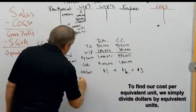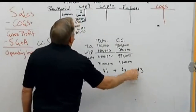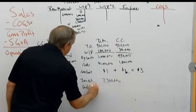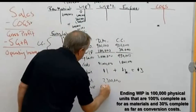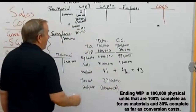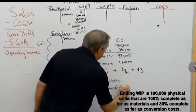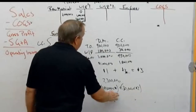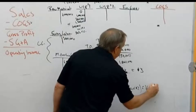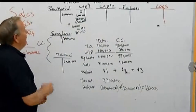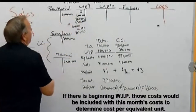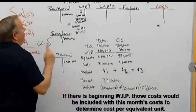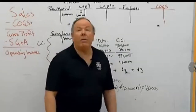Transferred out: $3 times 900,000 units equals $2,700,000. Ending work in process: 100,000 units at $1 for direct materials equals $100,000, plus 30,000 equivalent units at $2 for conversion costs equals $60,000, for a total of $160,000. That's all there is to process costing. The only tricky part we didn't discuss is if there were beginning dollars, we'd add those costs in and average them with this month's work.